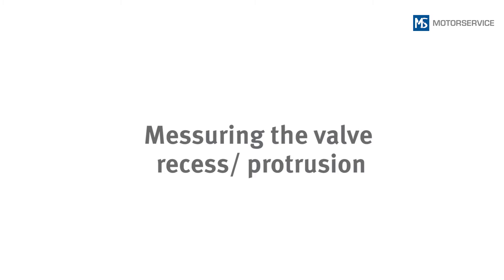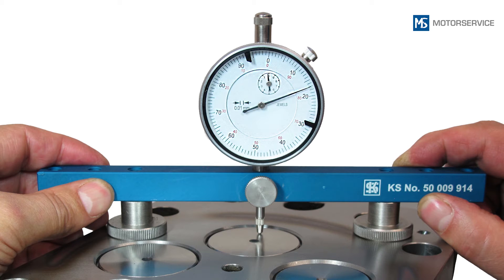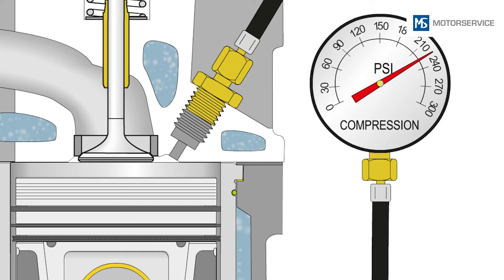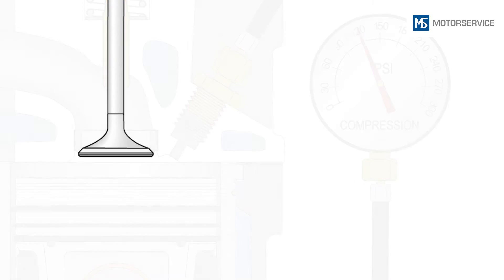The correct valve recess or valve protrusion is a prerequisite for smooth interaction of all components. Thus the dimension specifications of the engine manufacturer must be adhered to. If valves are positioned too deep in the cylinder head, this results in diminished compression.